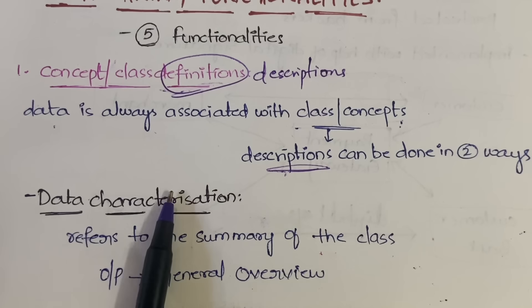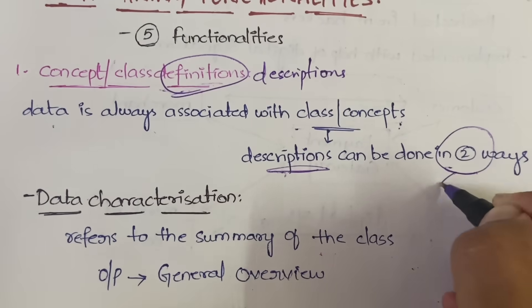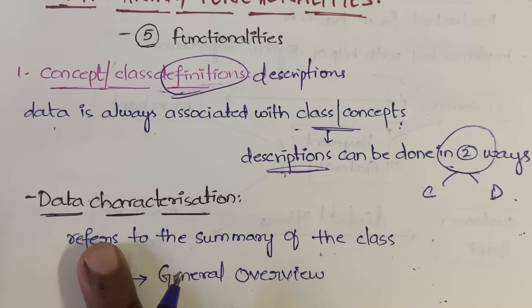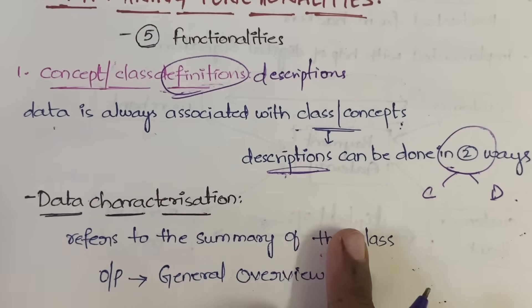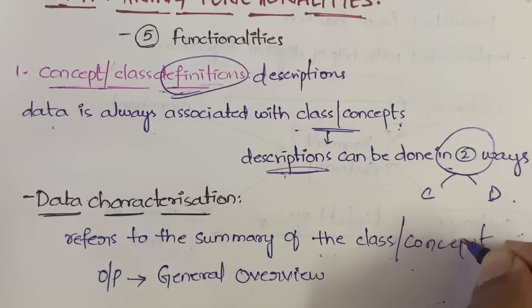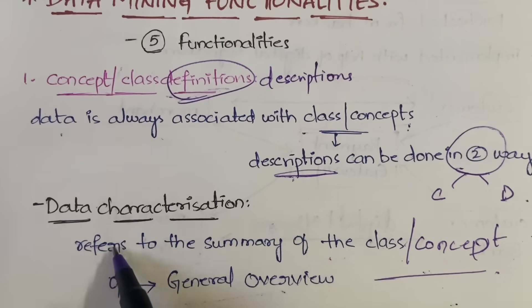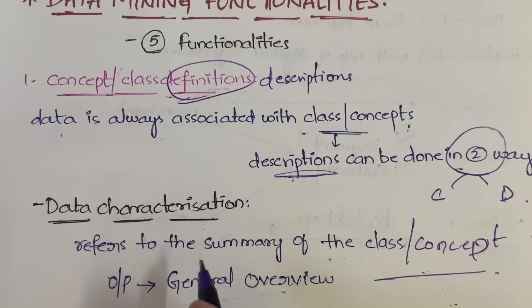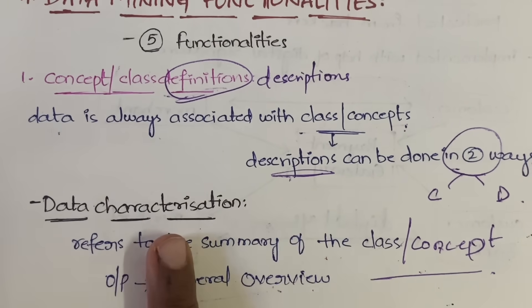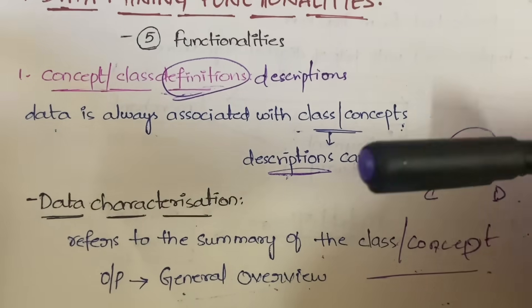The description of data can be done in two ways: data characterization and data discrimination. Data characterization is nothing but the summary of the class or concept which we are studying. The output of data characterization is the general overview of the class or concept.